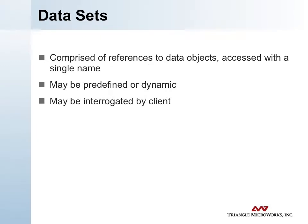Data sets associate a single name with a collection of data object references. A single data object can be in more than one data set at a time. When you access the single name, you get the values of all the members — you can do a get values to read all members or set value to set all members. Data sets can be predefined, meaning static and defined at boot time, or dynamic, where a client can create either a temporary or permanent data set within a server. Data sets can also be interrogated to retrieve their member list without reading the values.